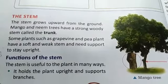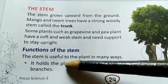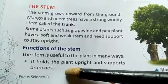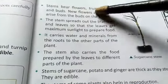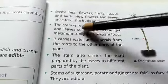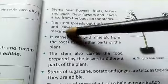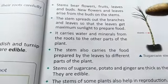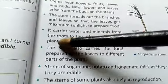Now the functions of the stem. First, it holds the plant upright and supports the branches. Second, stems bear flowers, fruits, leaves, and buds — new flowers and leaves arise from the buds on the stem. Third, the stem spreads out the branches and leaves so that the leaves get maximum sunlight to prepare food.